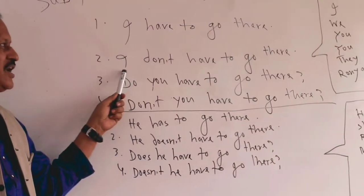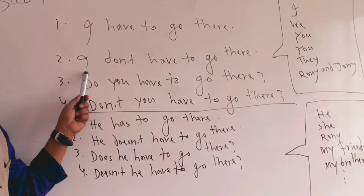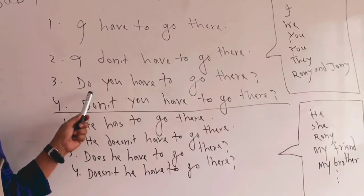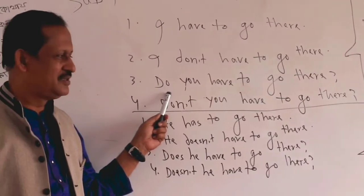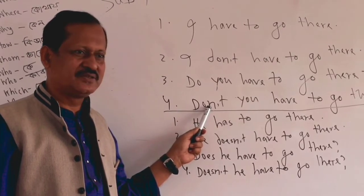Affirmative: 'I have to go there.' Negative: 'I don't have to go there.' Interrogative: 'Do you have to go there?' Negative interrogative: 'Don't you have to go there?'